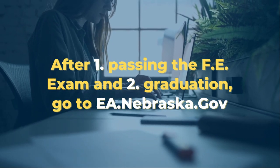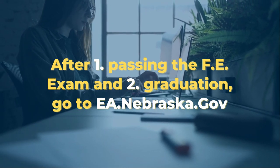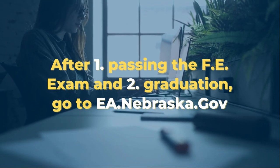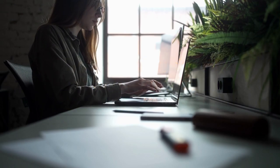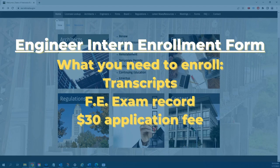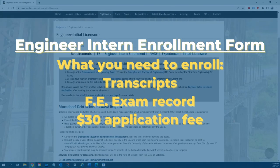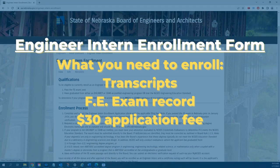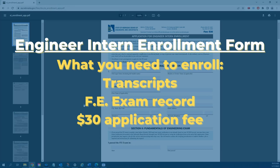Once you've completed those two things — graduation and examination — you can go onto the Nebraska Board of Engineers and Architects website and find the engineer intern enrollment form. With the form pulled up, fill it out, and along with a copy of your transcripts and a $30 fee, submit it to the board for review.